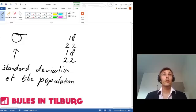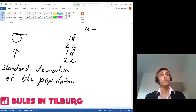The average of these numbers will equal 18 plus 22 plus 18 plus 22 divided by 4, which equals 20.